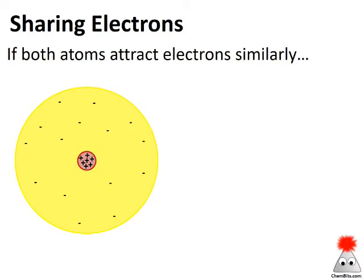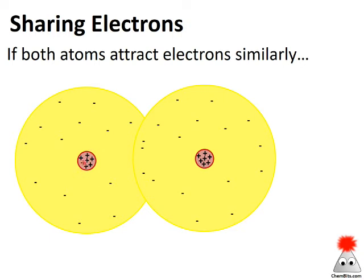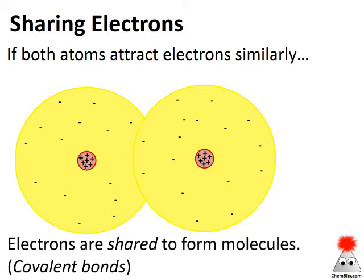What if the two atoms attract electrons with a fairly similar strength? Again, an atom comes in and there's some interaction where the electron clouds are partially merged. But if both nuclei attract electrons with about the same strength, there's not enough difference to pull electrons one way or the other. Instead, we've got a merged electron cloud in which electrons can move around and be shared between the two nuclei — the two atoms. This is a covalent bond. As those electrons move around and are shared, we form a covalent bond.